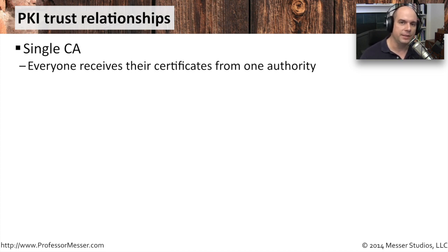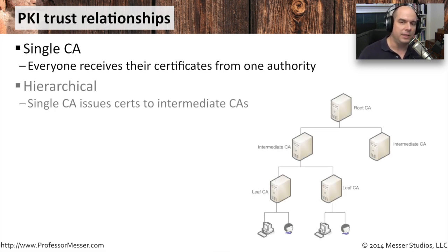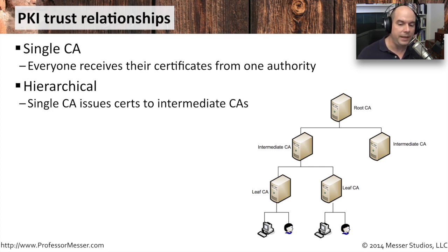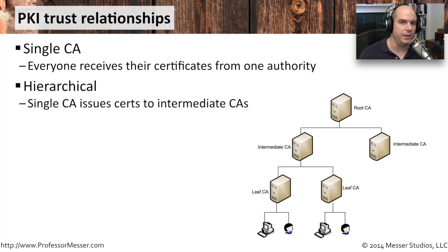If it's a large organization, you may find that it's easier to have more than one certificate authority. That environment is a hierarchical trust relationship where you might have a single root certificate authority issuing certificates to intermediate certificate authorities, and then underneath those you could have leaf certificate authorities, and finally your users and your resources.